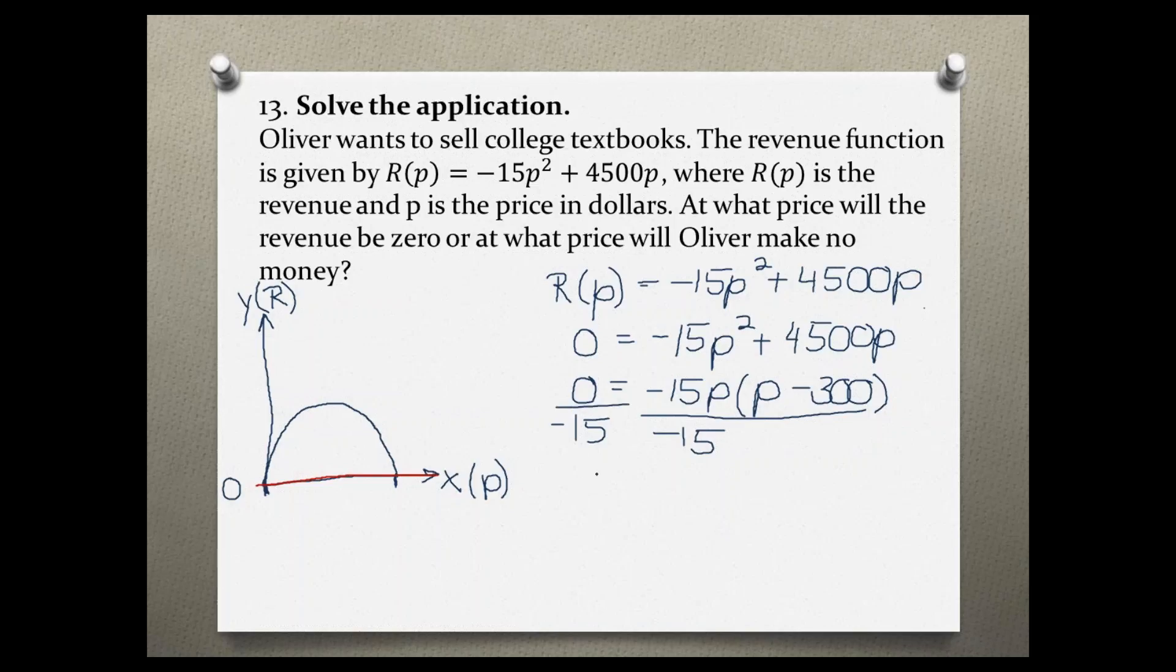And then we have 0 equals p and p minus 300. So applying the zero product rule by setting each part equal to 0, we have p equals 0 and p minus 300 equals 0.